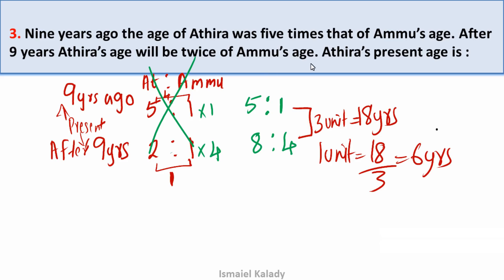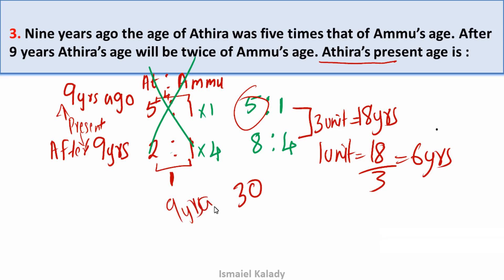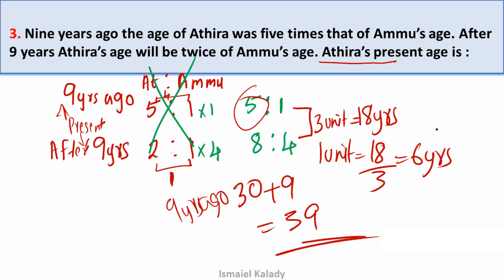We need to find the present age. Now, 5 units equals 30. Nine years ago, Adhira was 30 years old. So the present age is 30 plus 9, which equals 39. That is the right answer. If you have 8 units here, 8 times 6 is 48, but the present age answer is 39.